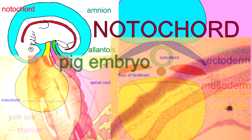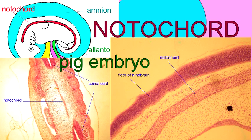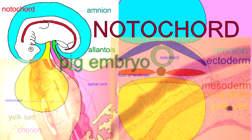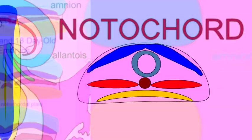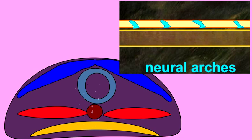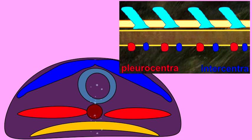Humans obviously do not need a notochord having a vertebral column, but the notochord forms early in embryonic development and it helps to induce surrounding tissues. It sends out chemical signals which help surrounding cells identify where they are in the embryo's body and then differentiate accordingly.